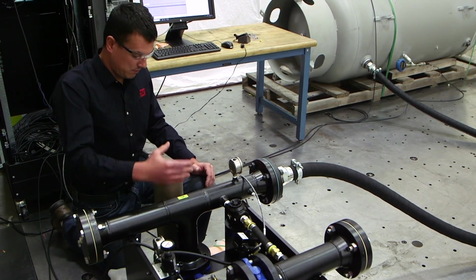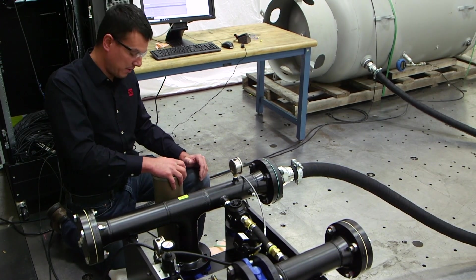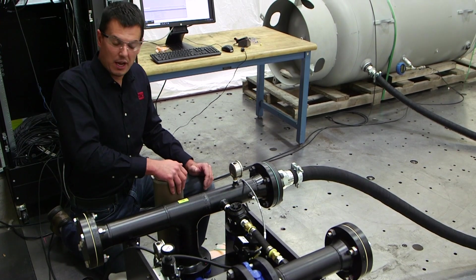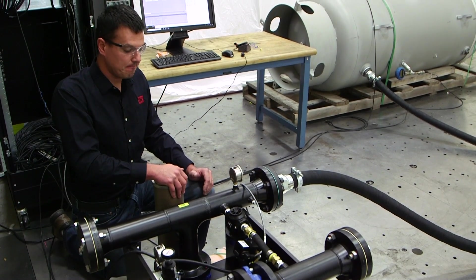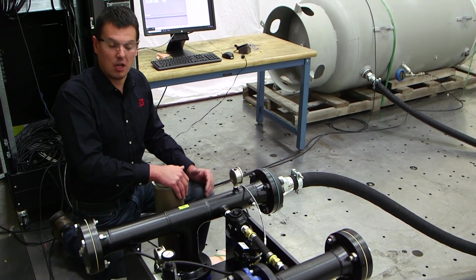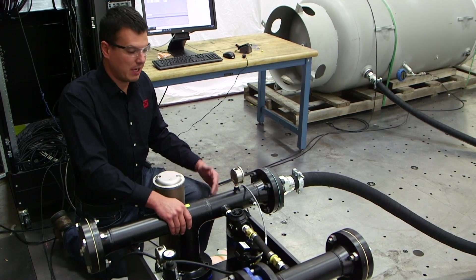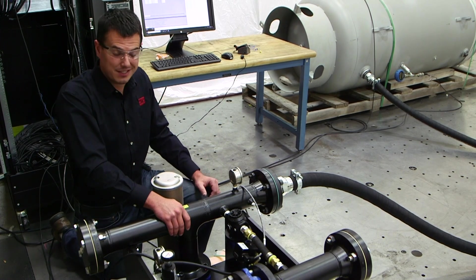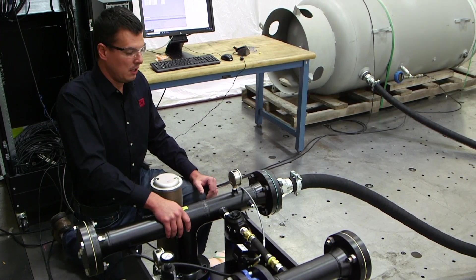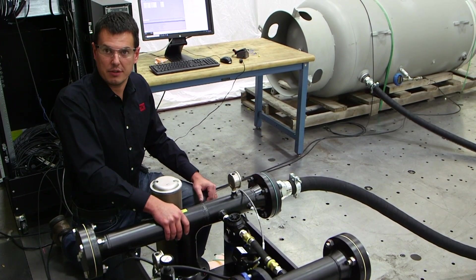For small depressurization, we're going to flow out this muffler right here. Helps quiet the system down. If there is a large command to depressurize, we got an additional auxiliary dump valve in the system, which we will talk about in a little bit.